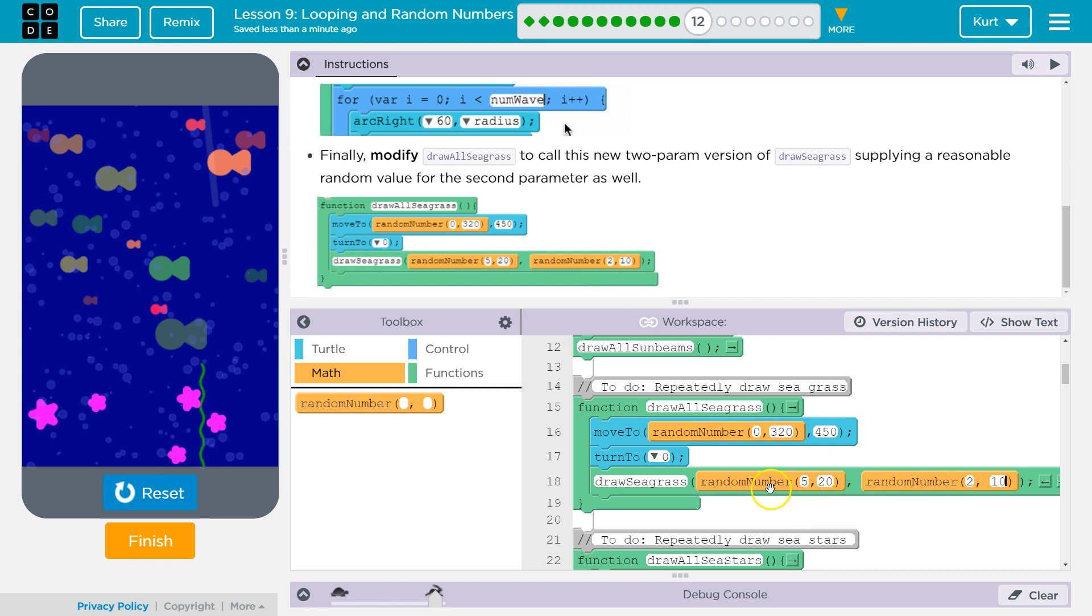And so now we have these two parameters. This one, I think, represented the arc or the radius of each arc, each bend, and this represented the number of those bends.